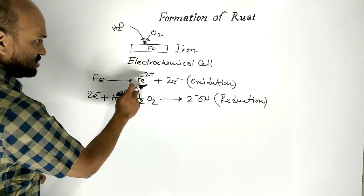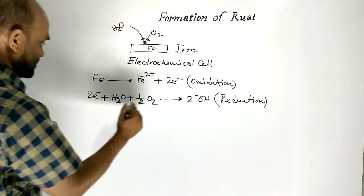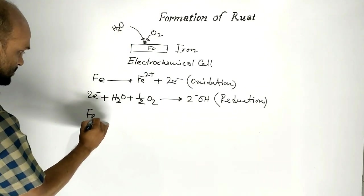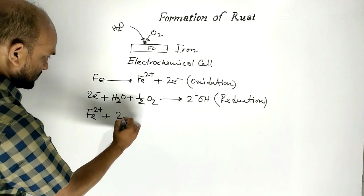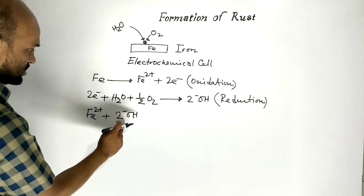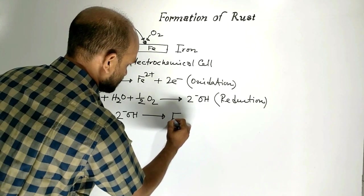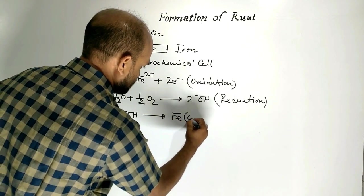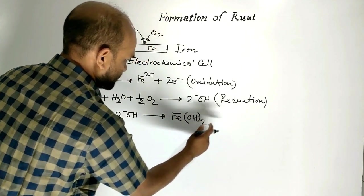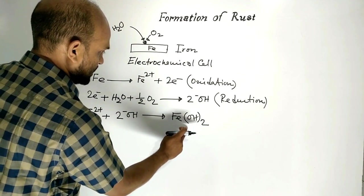Ferrous ion and hydroxide ion combine together to form ferrous hydroxide.